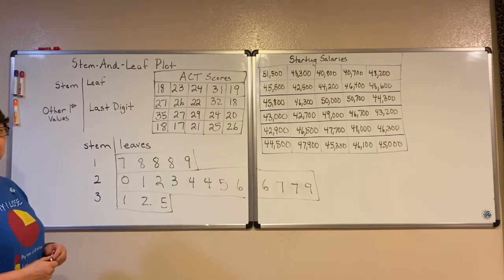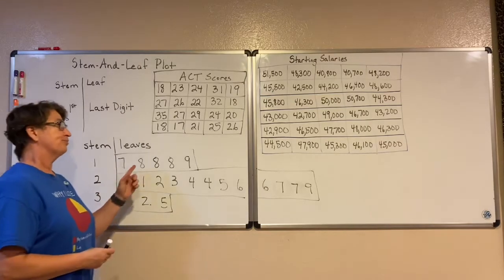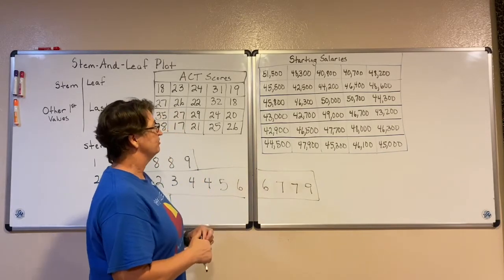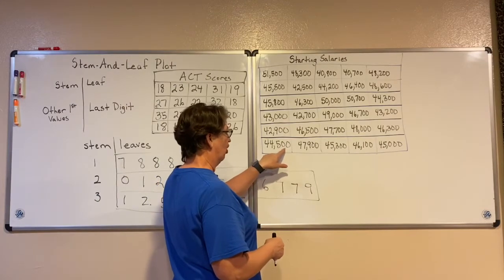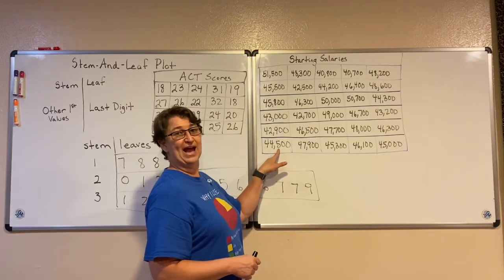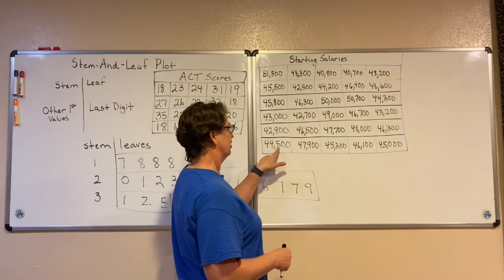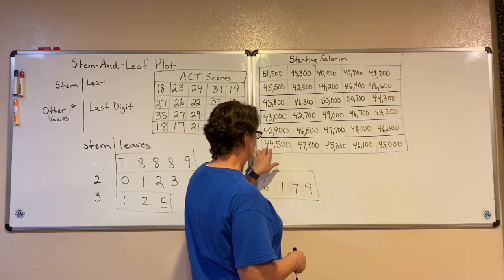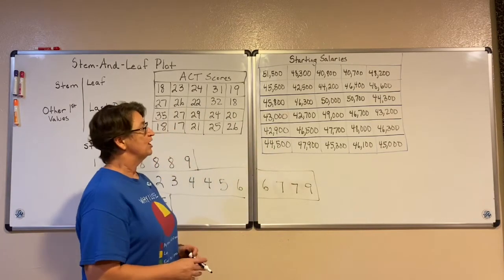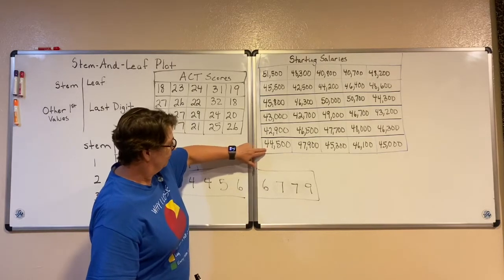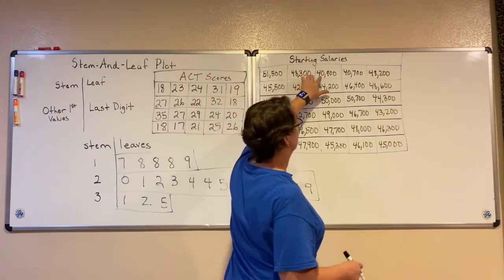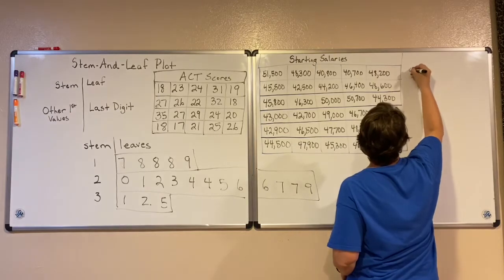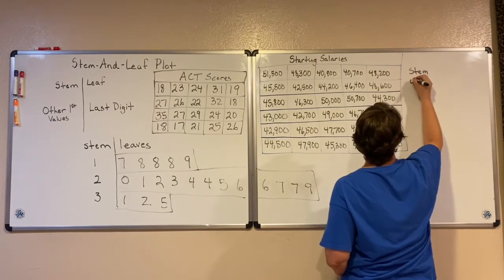I'm going to do the same thing with my starting salaries — create a stem and leaf plot. I'm going to look for my last important value. Notice that all of my data values have zeros, so my last important value is actually in the hundreds place. Those are going to be my leaves. Then my stems on these salaries are going to be the ten-thousands and thousands place. My smallest stem is going to be in the forties.